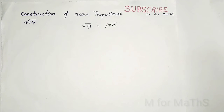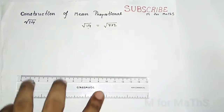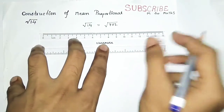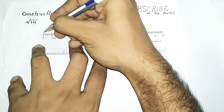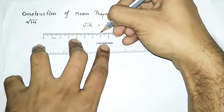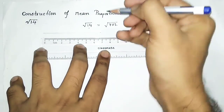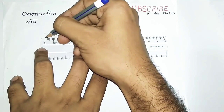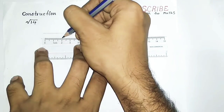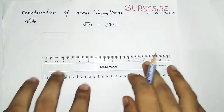The two numbers are 7 and 2. First, you have to draw a line having the length of the first number, that means 7 cm. Then you have to draw another line having the length of the second number, that means 2 cm.